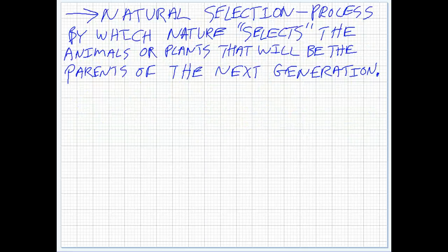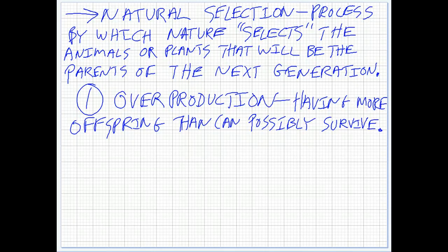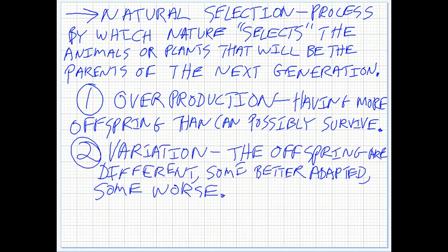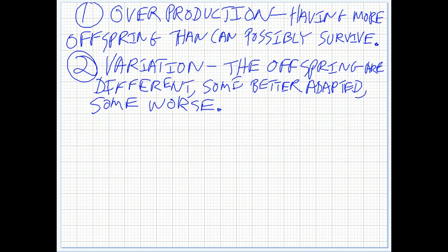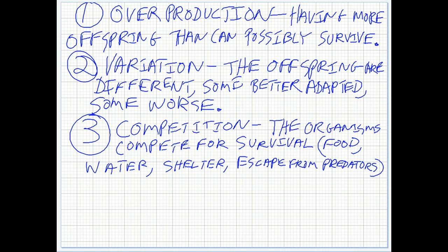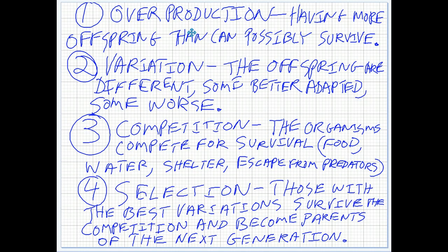Natural selection is the process by which nature selects the animals or plants that will be the parents of the next generation. Nature doesn't really have a mind — it just applies forces that cause some to die and some to live. Step one is overproduction: having way more babies than can possibly survive. That's why a grasshopper will have 500 to 1,000 eggs at a time, but only a few survive. All those babies are different — that is variation. Some will be better adapted and some worse, and that determines who lives or dies when we get to the competition stage. Organisms compete for survival — for food, water, hiding places, shelter, warm places to sleep in the winter — and those who lose this competition will die. Those with the best variations survive and become the parents of the next generation, passing those good traits on to their offspring. So we have overproduction, variation, competition, and selection.